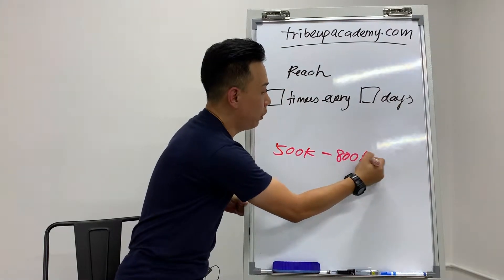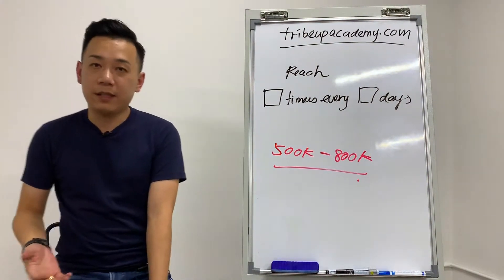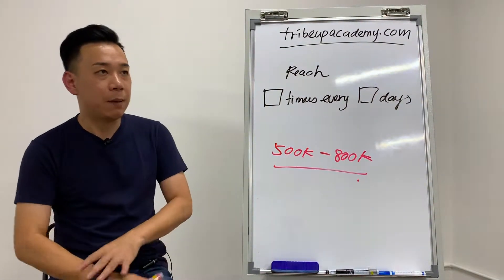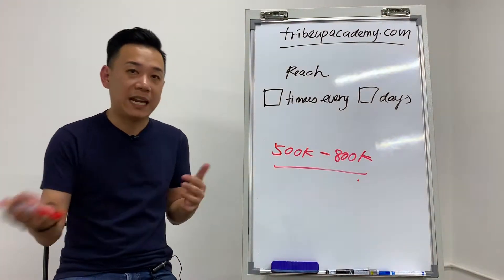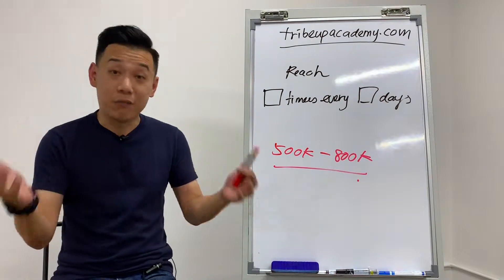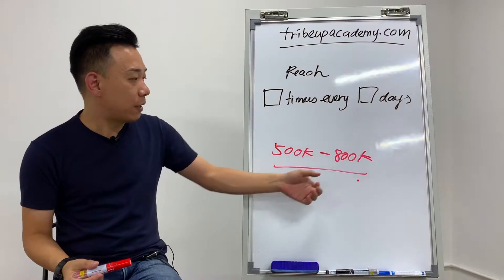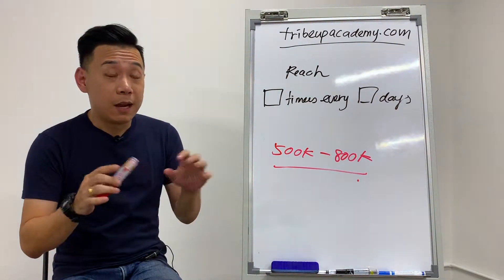In order to reach this relatively big audience size, the amount of money to spend is actually quite big. This is not a benchmark, but based on our experience, plus minus every ringgit you spend, you're able to reach about 30 to 80 people averagely. With that kind of amount in mind, in order to reach this 500,000 to 800,000 once, it's going to cost you a bomb. Another thing you have to remember now.